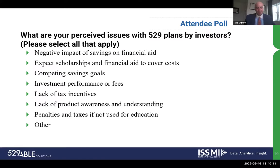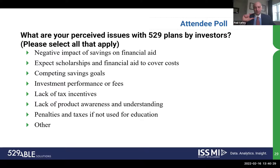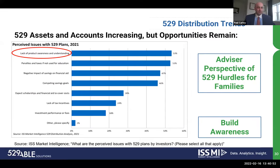Moving to 529 distribution trends — we'll run the live poll. We ask a similar question to advisors and parents in our annual survey: what are the perceived issues for 529 plans for investors? We also ask financial advisors what they perceive as their clients' hurdles. Advisor responses show lack of product awareness as the number one hurdle, which is why it's so important to build awareness for 529 plans and ABLE accounts. Today's attendee responses: 69% said lack of awareness, 45% said competing savings goals, 30% said negative impact on financial aid or scholarships, and 16% said investment fees and performance.